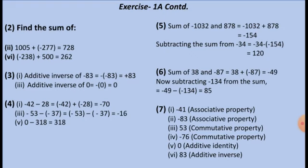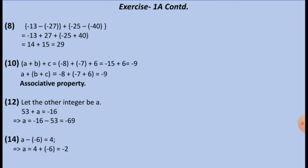The minus sign is missing there, so please correct it. The sum of minus 1032 and 878 equals minus 1032 plus 878, which comes to minus 154. Questions 6 and 7 have also been answered. For question 8, the associative property: (a plus b) plus c equals a plus (b plus c), and both sides give minus 9, satisfying associative property. For question 9, find the value of integer a: let the other integer be a, then 53 plus a equals minus 16, and question 14 has also been solved.